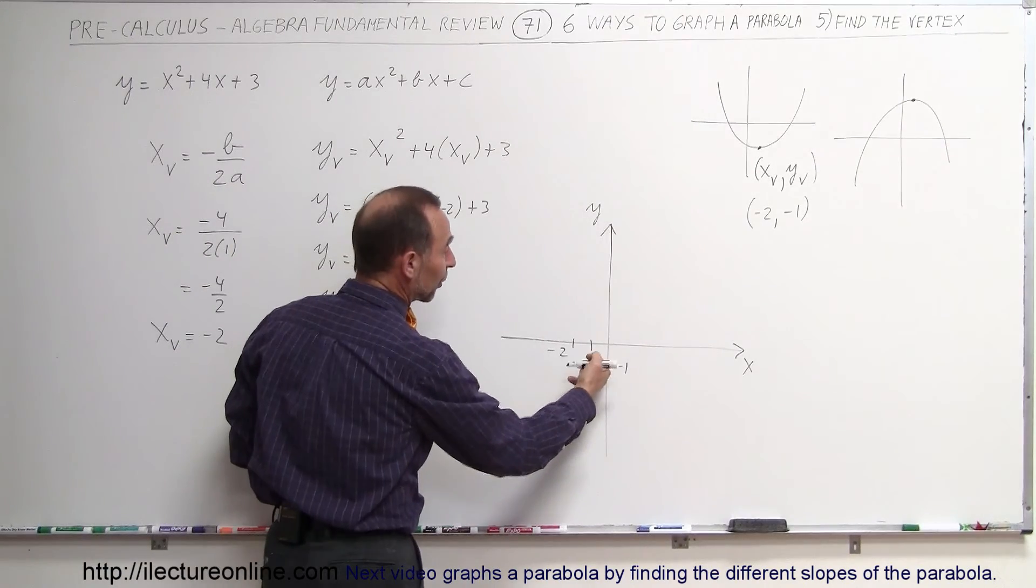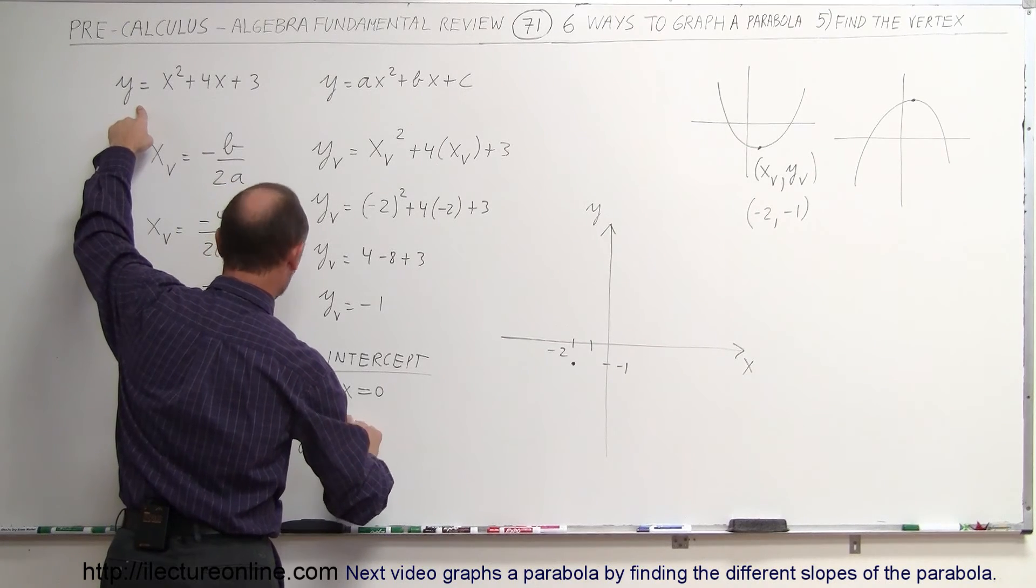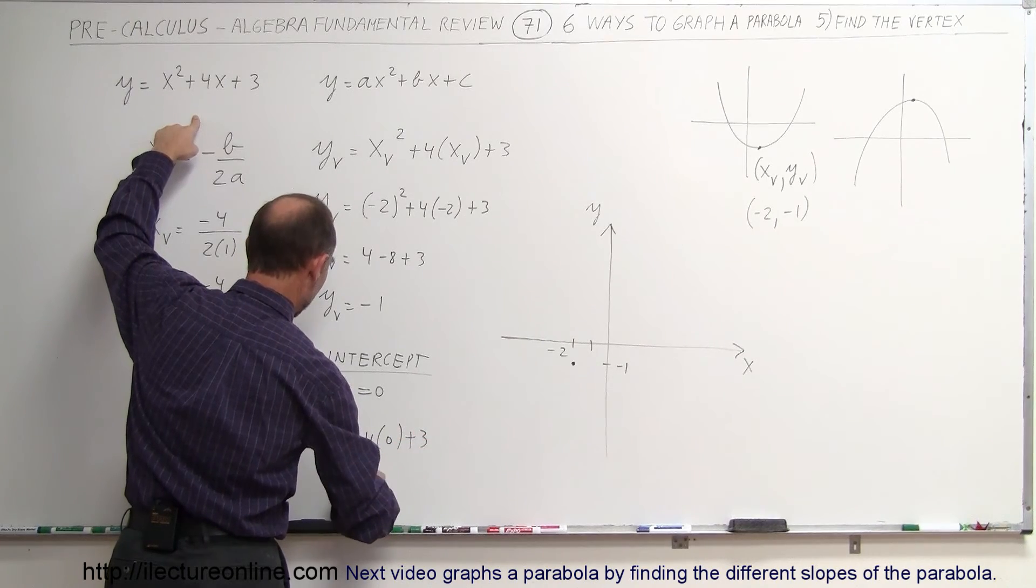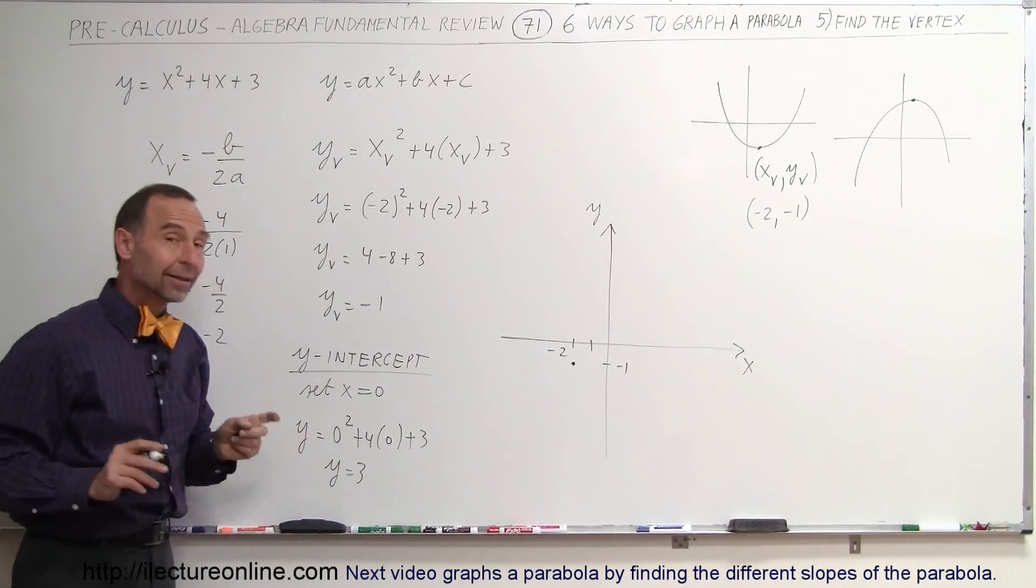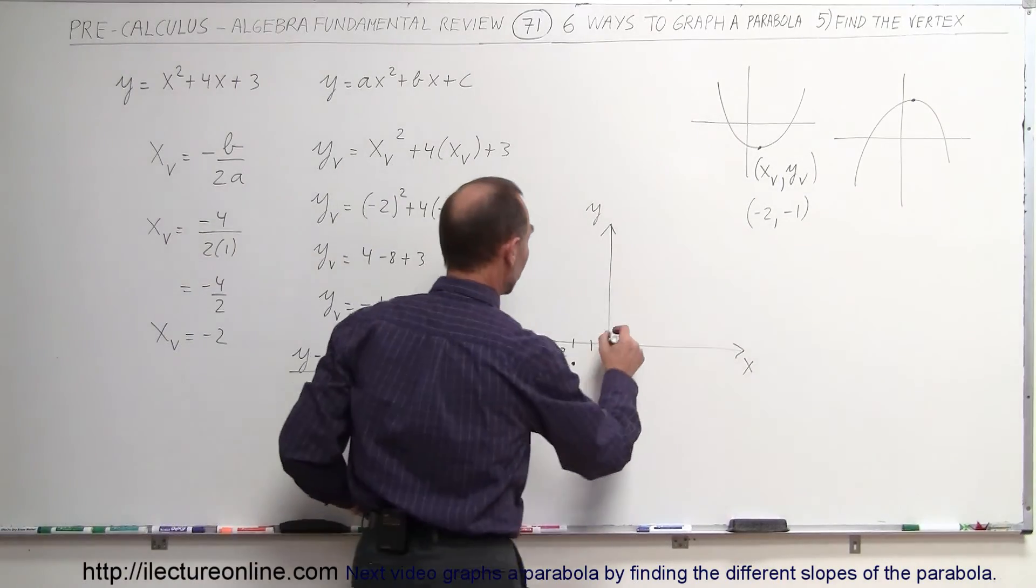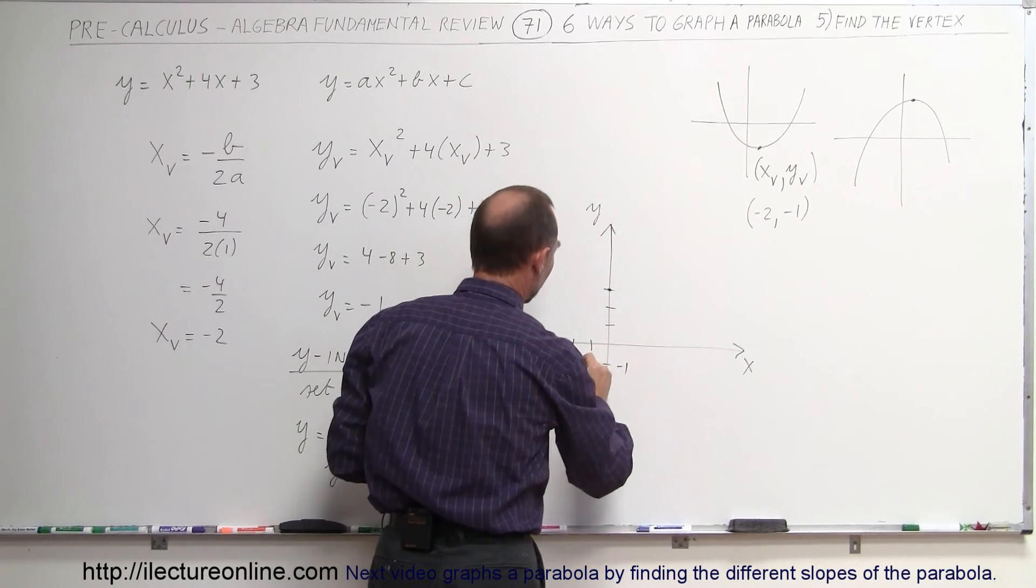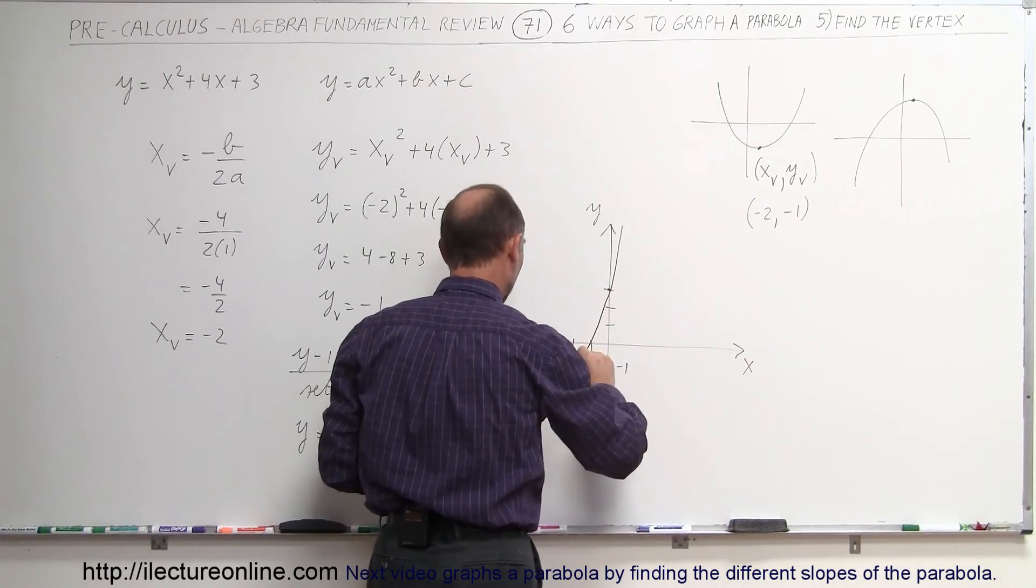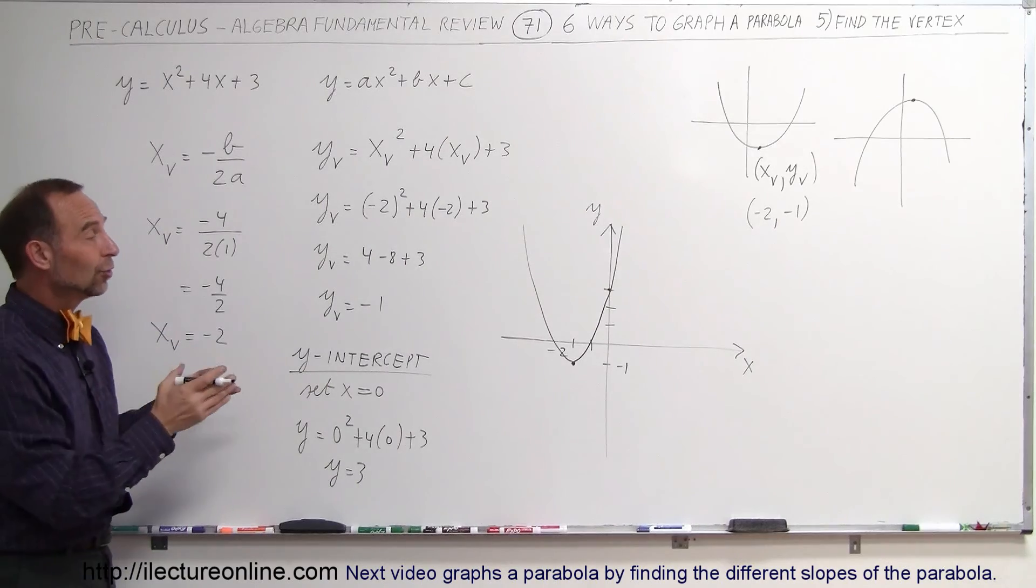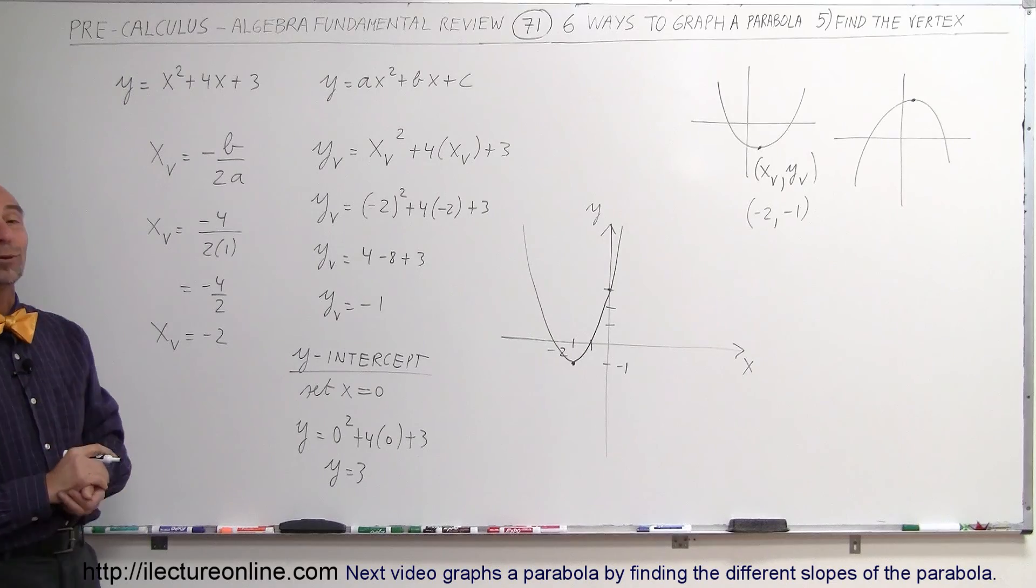I'm going to set x equal to 0. Remember, when x equals 0, that's where it crosses the y-axis. So I then evaluate y equals 0 squared plus 4 times 0 plus 3, or y equals 3, which means the parabola will cross the y-axis when y equals 3 and when, of course, x equals 0. So 1, 2, 3, right there. So now I have a pretty good idea what my parabola is going to look like, and it looks like this, and like that on the other side. And that's how we graph the parabola using the vertex to find one of the important points on the parabola. That's how we do that.